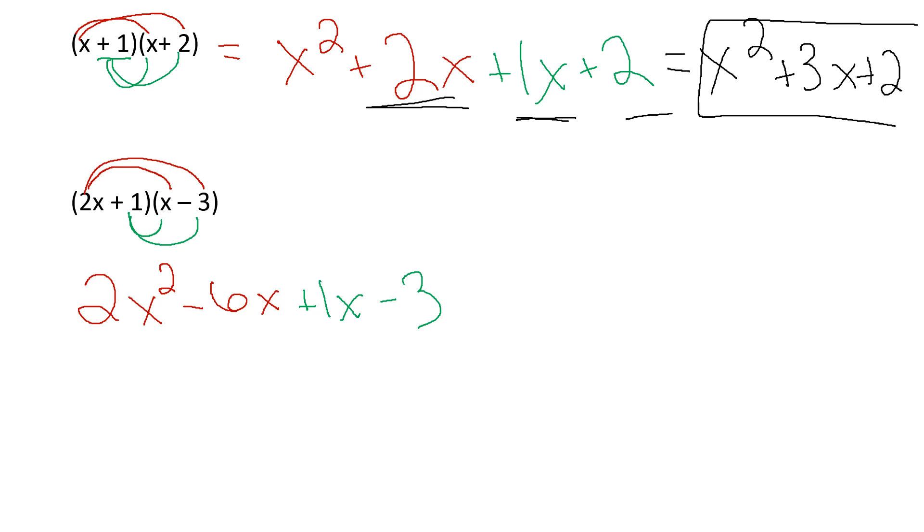And see, when I draw my arrows, I can tell that that 2x has touched every term in the second parenthesis. I can tell that that 1 has touched every term in that parenthesis. And now I have to check and see if I have any like terms. And I do. I have an x and an x. There's nothing to combine with my 2x squared, so it stays. Negative 6x plus 1x is negative 5x. The term doesn't change. Minus 3.